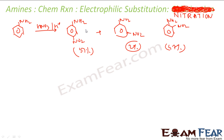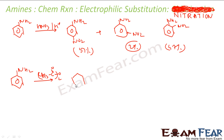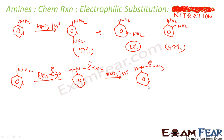If I want para-nitroaniline as the major product, I can poison this aniline with acetic anhydride first. Then on this acetylated product, if I do nitration with H₂SO₄, I get the major product as para-nitroacetanilide. It is called para-nitroacetanilide. Then I can do hydrolysis with OH⁺ or OH⁻ to get back my NH2, giving para-nitroaniline as the major product.